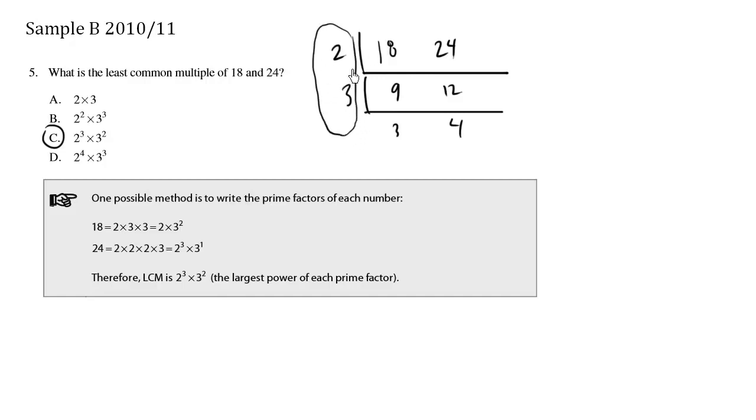So all the column here, this column here all multiplied is the GCF. So the GCF here is 6. But if we multiply all the way across, 2 times 3 times 3 times 4, we get the LCM.